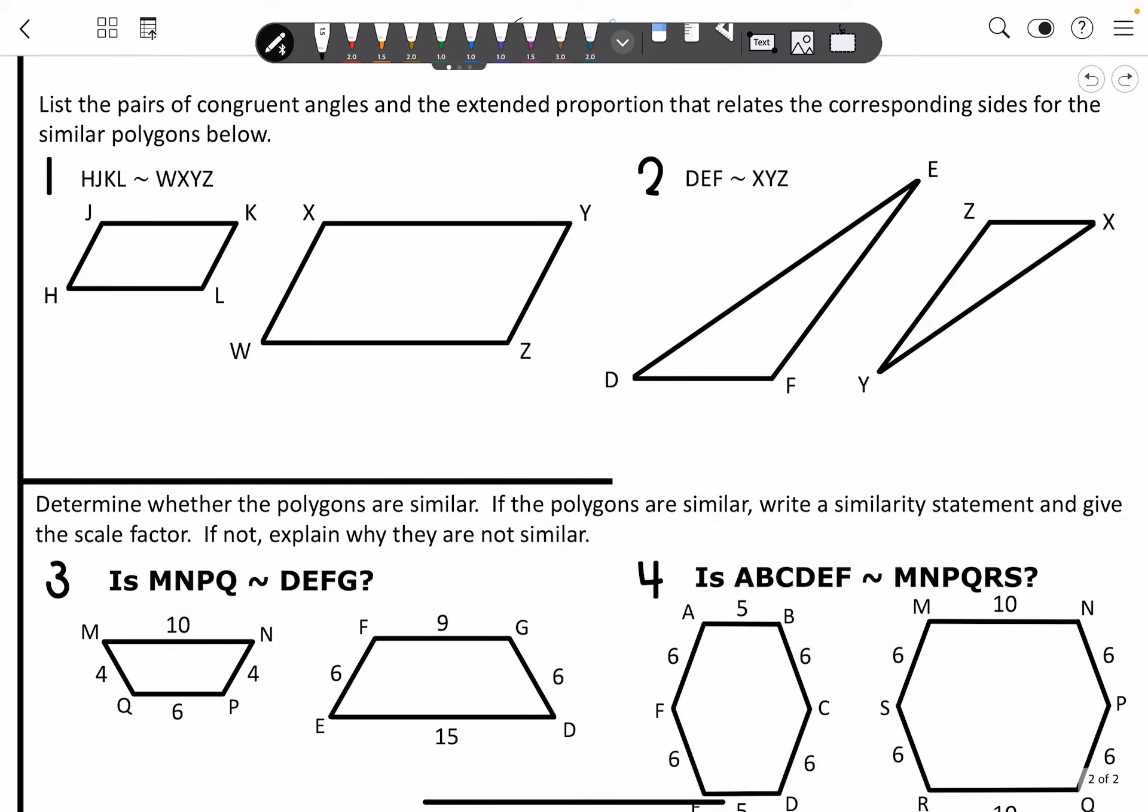Alright. Now, number one, list a pair of congruent angles and extended proportion that relates to corresponding sides. So we've got H and W, J and X, Y and K, and then Z and L. So I'll just write them out.